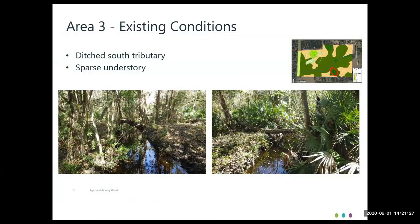This is Area 3, on the south side of the parcel — a ditched tributary that flows into the Mayaka from south to north. As you can see from these pictures, it's much more confined with many trees to work around, though there was a sparse understory.